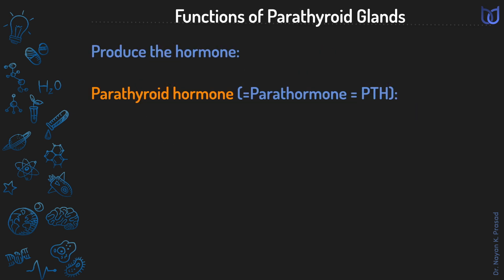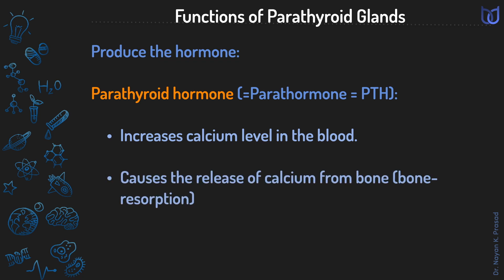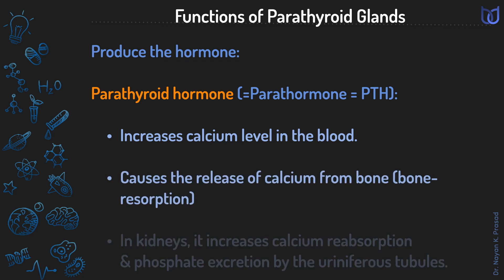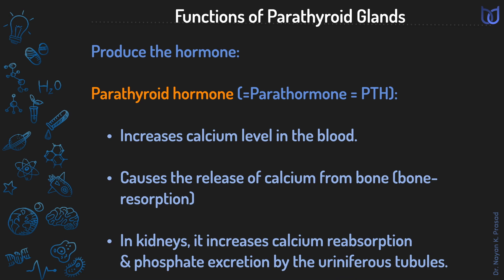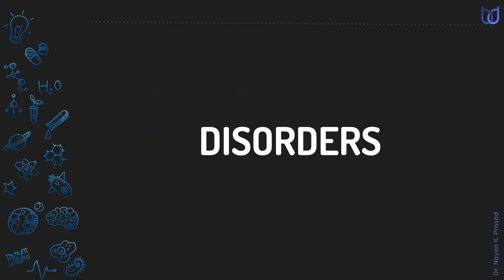Parathyroid hormone increases calcium level and decreases phosphate level in the blood. It causes the release of calcium from bone, while in the kidneys it increases calcium reabsorption and phosphate excretion by the renal tubules. So parathyroid hormone is concerned with the level of calcium in blood and bone.